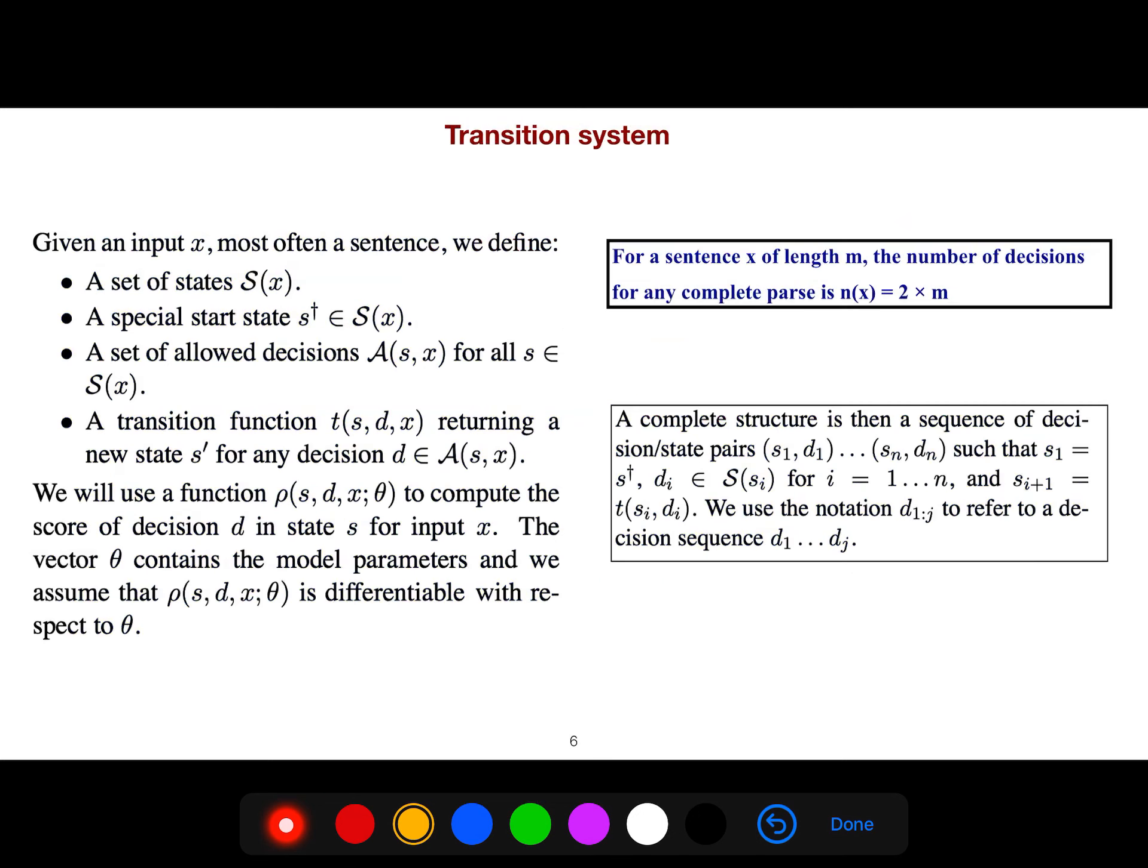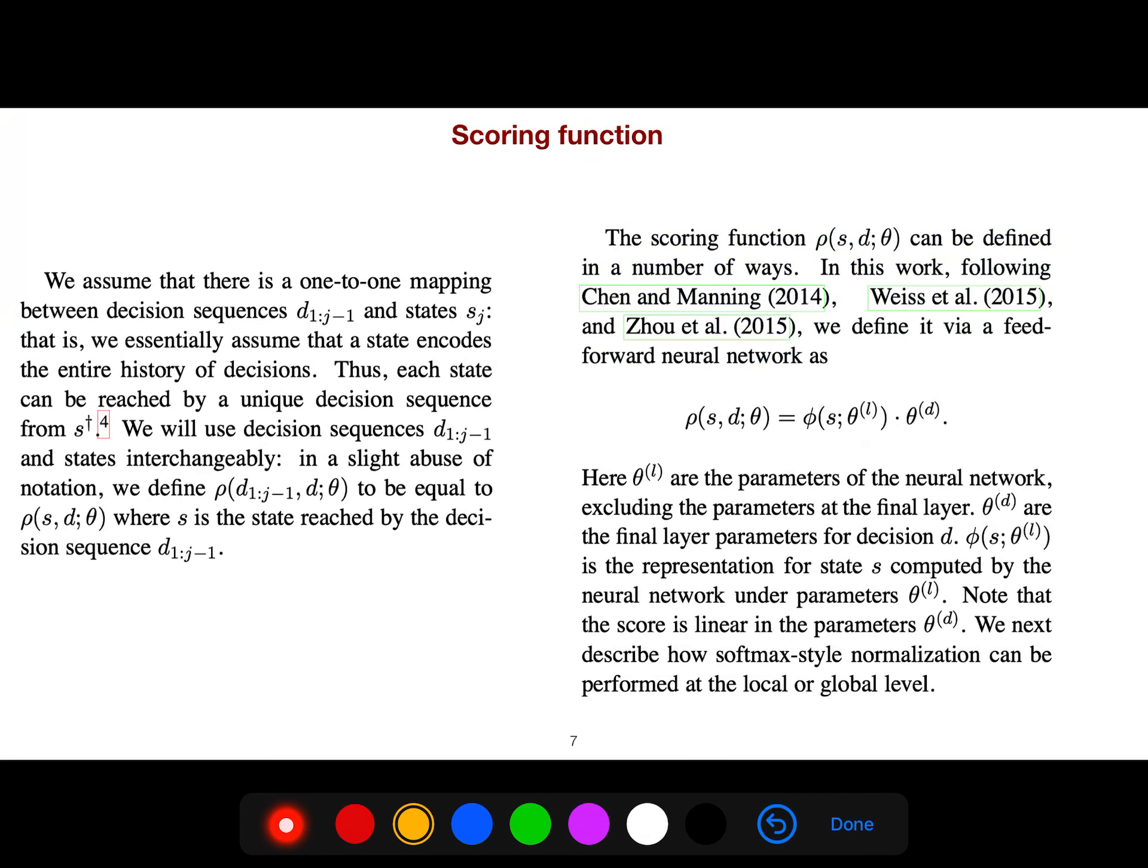The transition system is like the previous lecture, that great paper of Christopher Manning in 2014. I don't repeat it, everything is the same. The scoring function is a feedforward neural network.